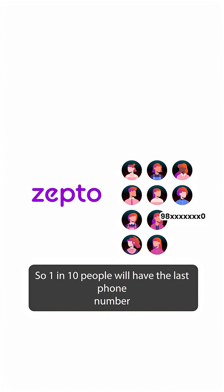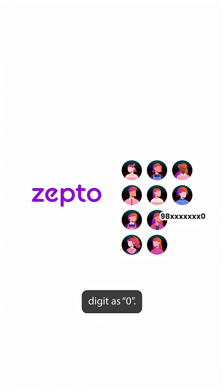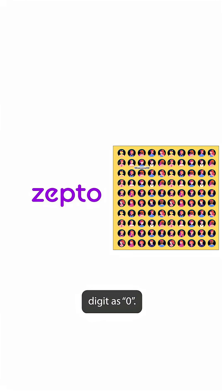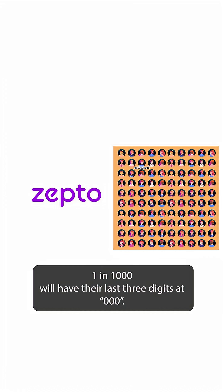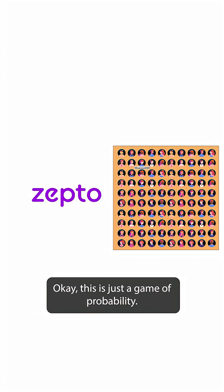1 in 10 people will have the last phone number digit as 0. 1 in 100 people will have the last two digits as 0 and 0. 1 in 1,000 will have the last three digits as 0, 0, 0. Okay, this is just a game of probability.